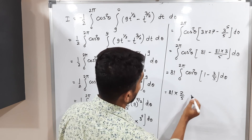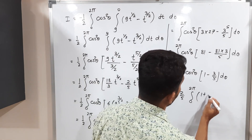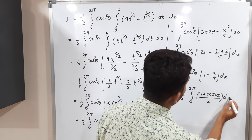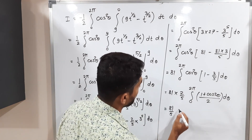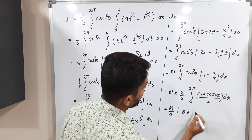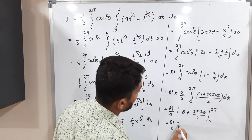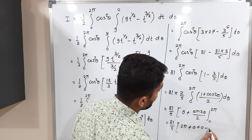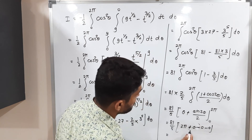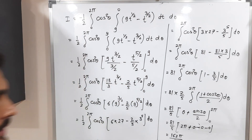Using the formula cos²θ = (1 + cos2θ)/2, the integral becomes (81/5)∫₀²π (1 + cos2θ)/2 dθ = (81/5)[θ + sin2θ/2]₀²π. Evaluating: at 2π, sin2π = 0; at 0, sin0 = 0. So the result is (81/5)·2π = 162π/5. This is the required answer.